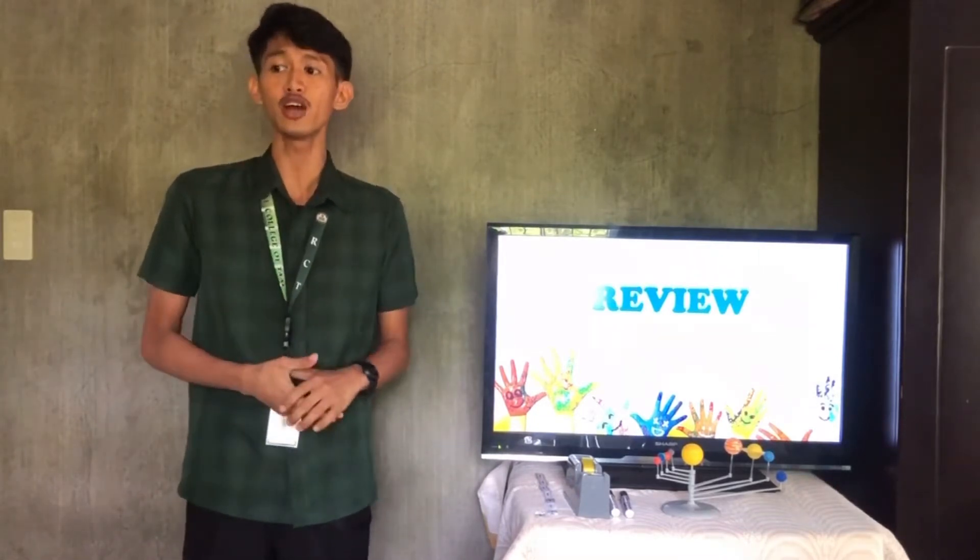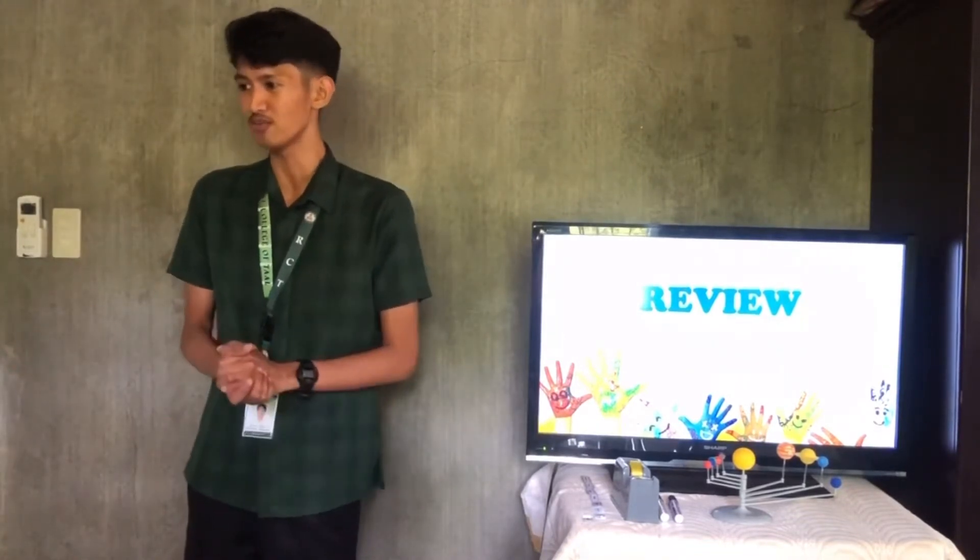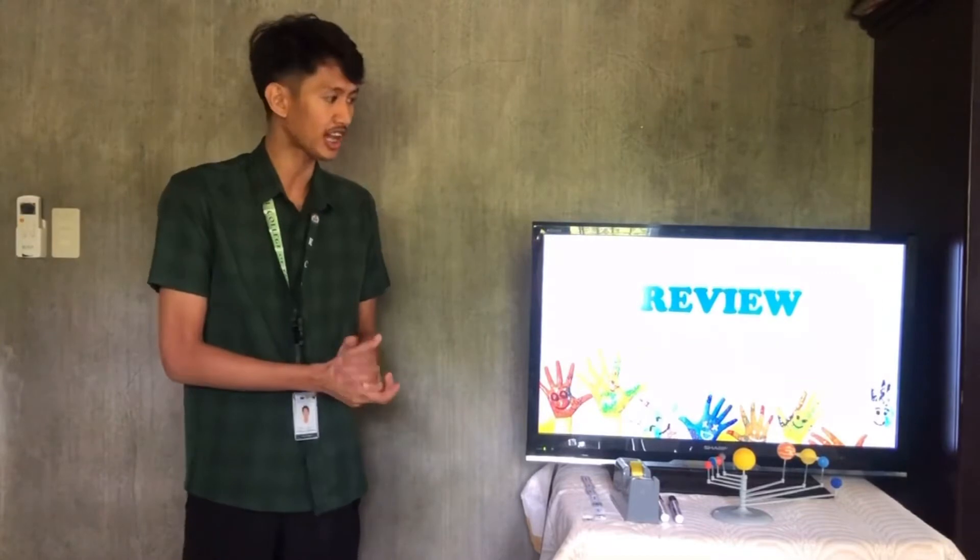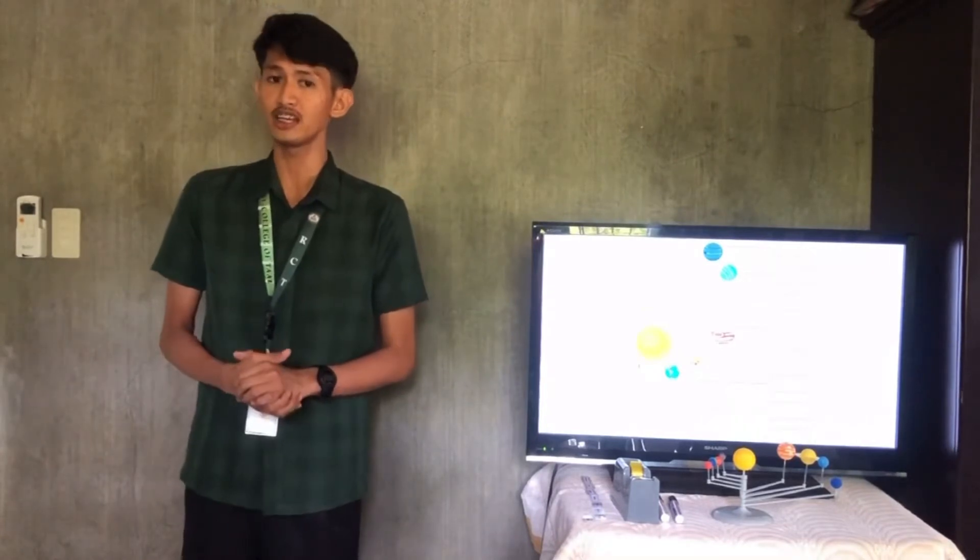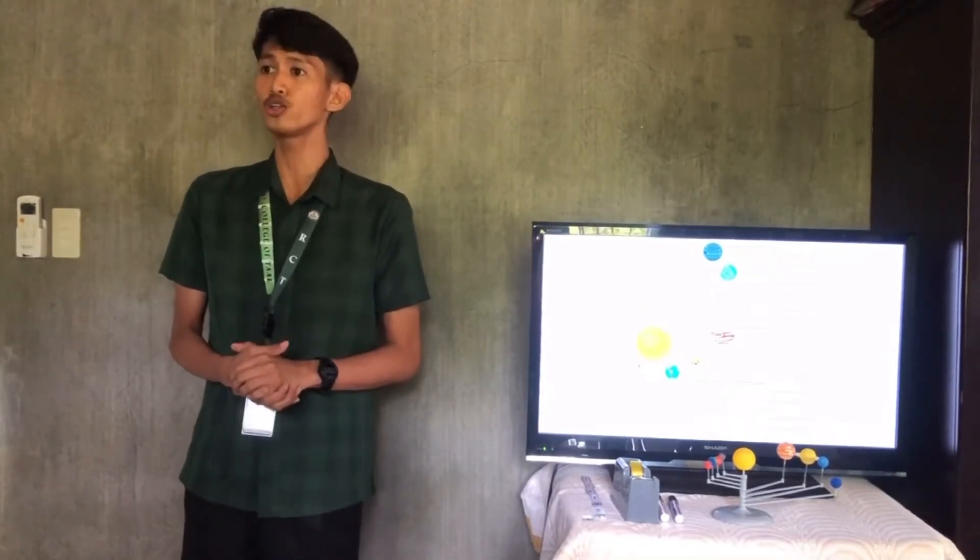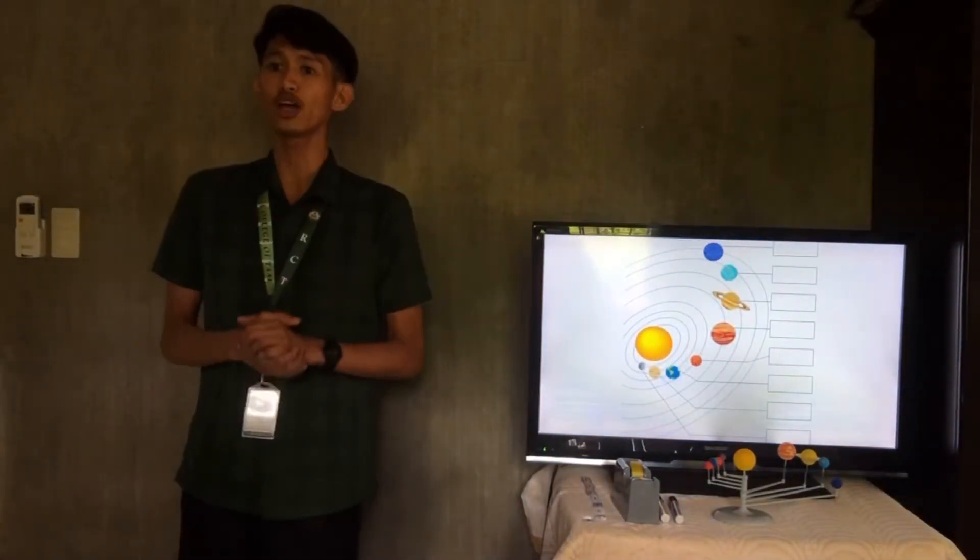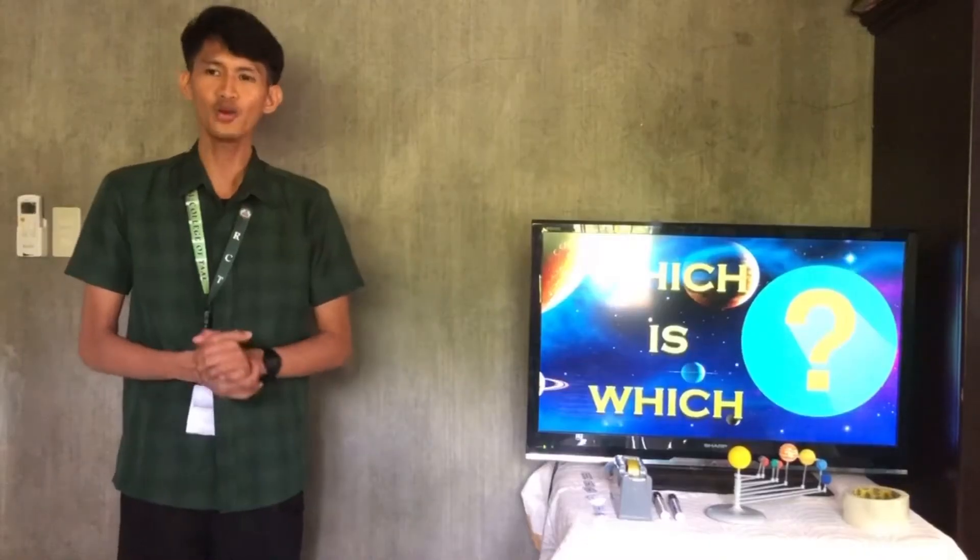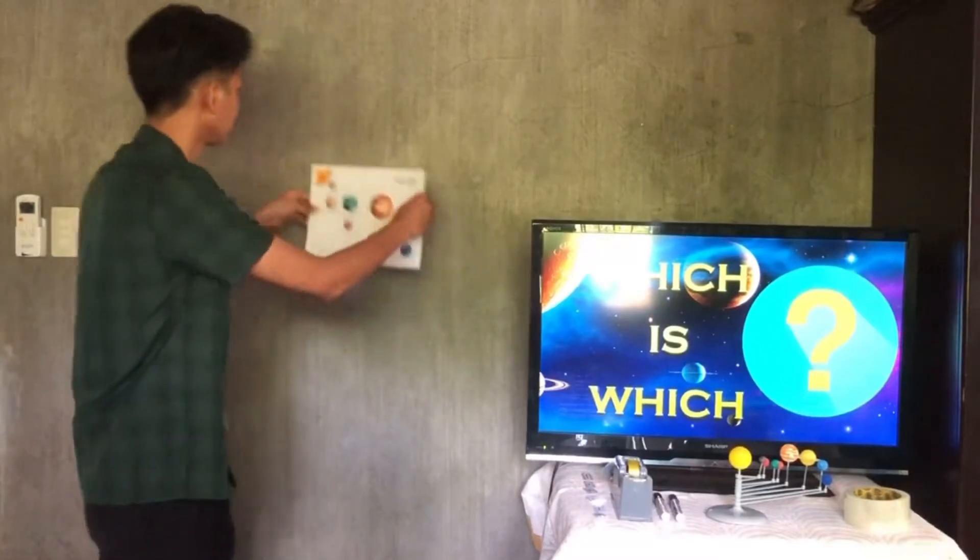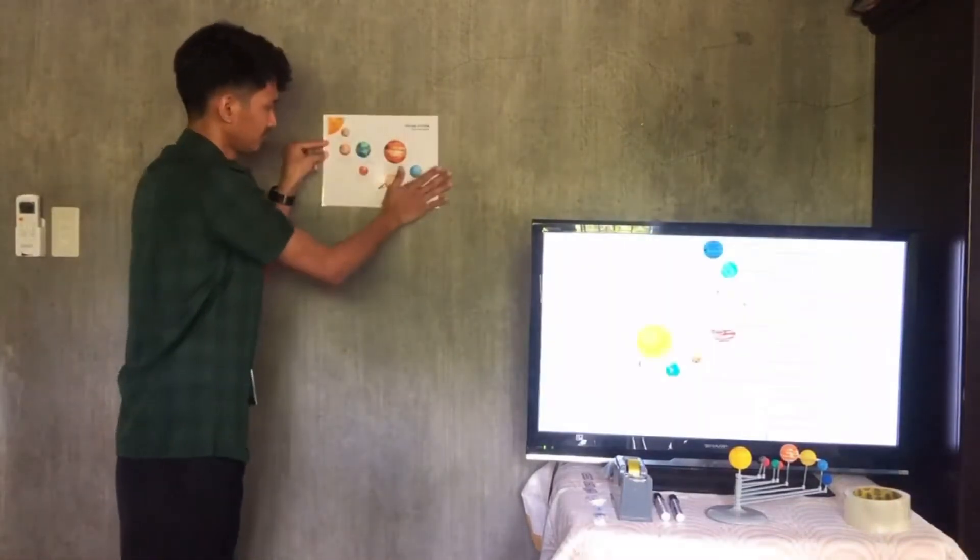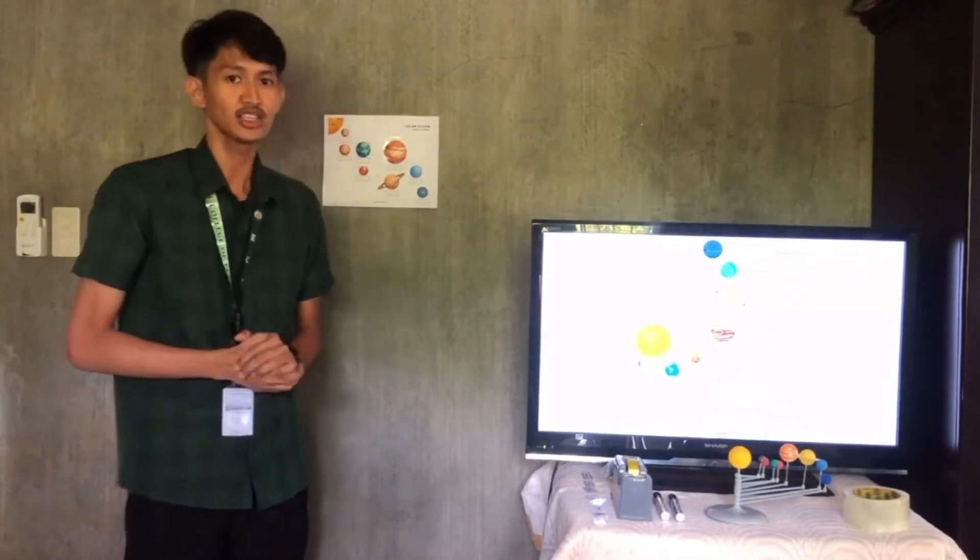But before that, I prepared here a motivation activity. I believe everyone's already familiar with the solar system, right? Our activity entitled, Which is Which? Here, you will identify the names of the planets in our solar system according to their proper order. I will give a clue for each planet to help you recognize what is being described. As we all know, the Sun is in the center of our solar system. Now, let's check if you can recall the planets in the correct sequence.